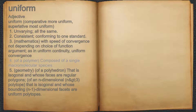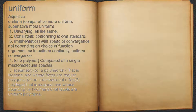4. Of a polymer, composed of a single macromolecular species. 5. Geometry: of a polyhedron, that is isogonal and whose faces are regular polygons; of an n-dimensional (n > 3) polytope, that is isogonal and whose bounding (n-1)-dimensional facets are uniform polytopes.